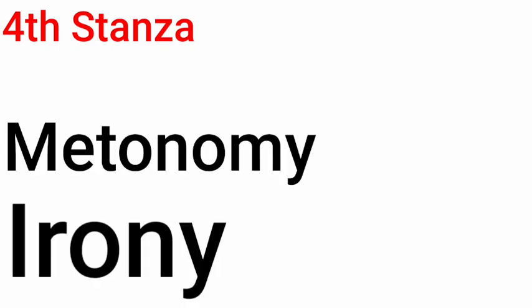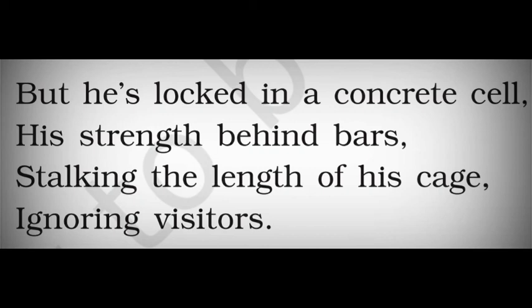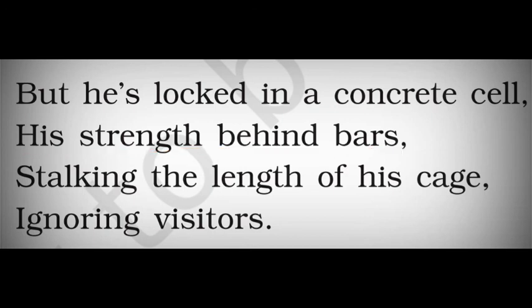In stanza four, metonymy and irony are used. 'He is locked in a concrete cell' — here 'concrete cell' represents the cage. When one word represents another, that is called metonymy. Irony: 'his strength behind bars' — the poet says the tiger is very strong behind bars, but the reality is just the opposite: behind the bars, the tiger is helpless and without any strength. That is irony.